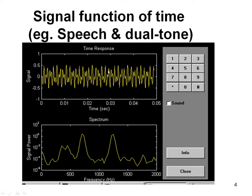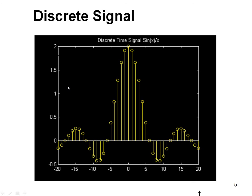Here I have given you an example of a one dimensional signal where the x-axis is the independent variable time and the y-axis is the amplitude of the signal. This is the spectrum of the signal shown in this figure. This diagram gives you the one dimensional signal example. The previous diagram is a continuous signal and this is a discrete signal where the signals are defined only at integer values of time.